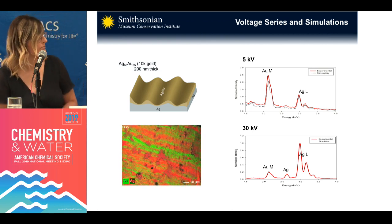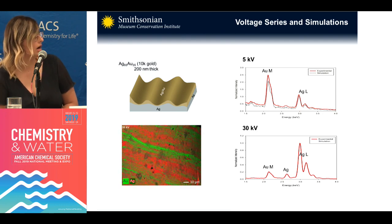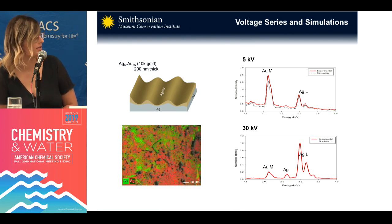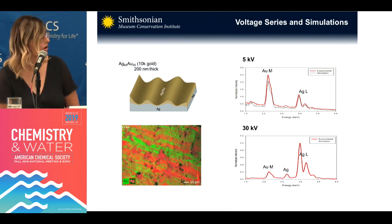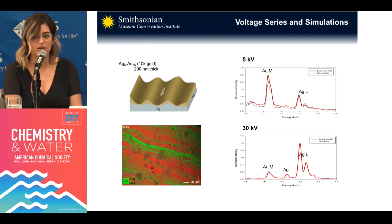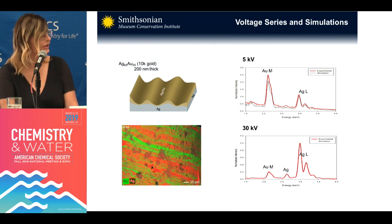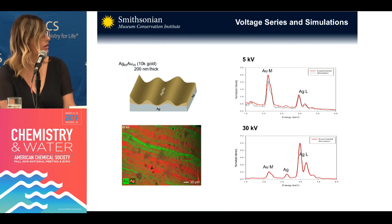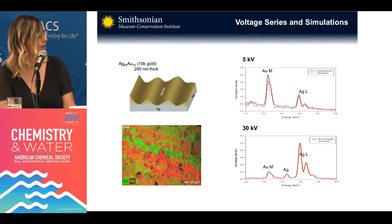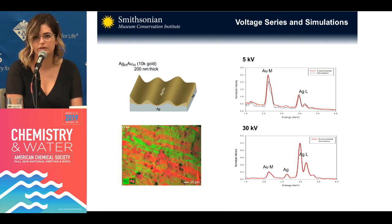At lower energy — and you can see there's a gif cycling through — we're only seeing that gilt layer. At the low energy image in the gif, you can't see the striations, meaning we're just seeing that surface and not the mixing between the gold and silver due to the wire drawing. We can use the information from the cross-section: we know it had a 200 nanometer thick gilt layer of 10 karat gold, and we can use this to simulate what the spectra would look like at different voltages. The experimental data and the simulations are matching very well. This is one of the steps towards working with these threads without having to actually create cross-sections or use destructive sampling.